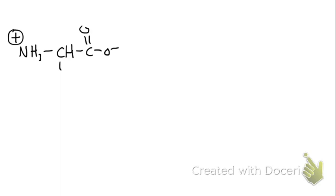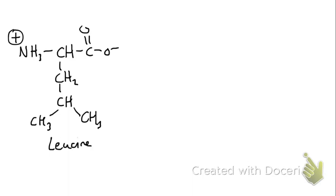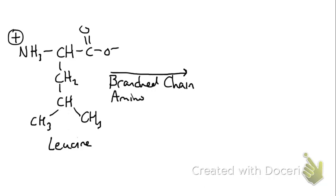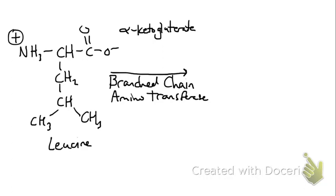We're going to start looking at how these amino acids are metabolized, where we break the pathway for maple syrup urine disease, and then how we treat it. So we have leucine, which goes through an enzyme known as branched chain amino transferase. We've seen amino transferase before, and what we're going to use is alpha ketoglutarate.